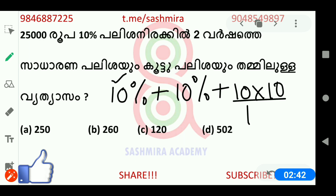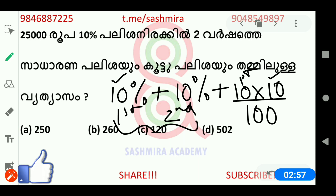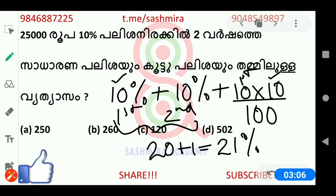Here, the compound interest in the first year — again, the compound interest in the second year. The compound interest will be calculated in the first year. After we do this, these predictions are 20%. Here we are going to do this — 100 by 100, that's 1. That's 21. This is compound interest for 2 years.